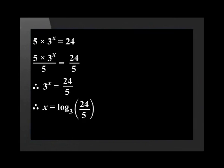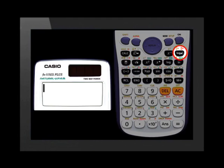Therefore, x is equal to the log of 24 divided by 5 to base 3. Now let's use the calculator to solve for x. First, we push the log button, then 3. Move across into the brackets. We need a fraction, so push the fraction button.